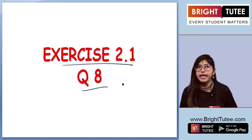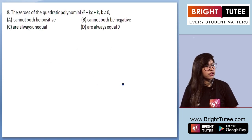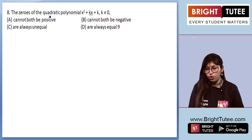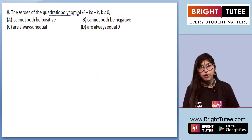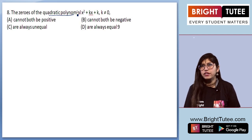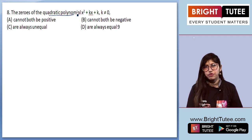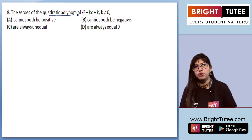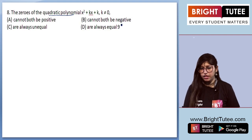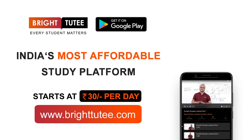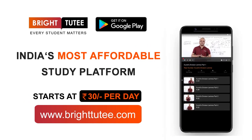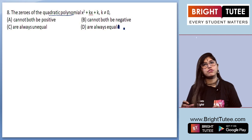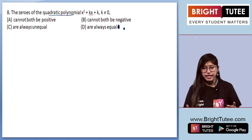Exercise 2.1, question 8. The question says the zeros of the quadratic polynomial x² + kx + k, where k is not equal to 0. We have 4 options: either they cannot both be positive, cannot both be negative, are always unequal, or are always equal.